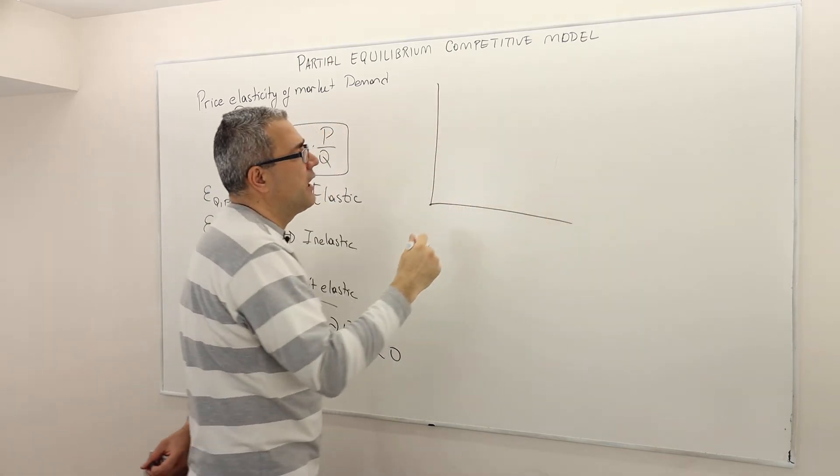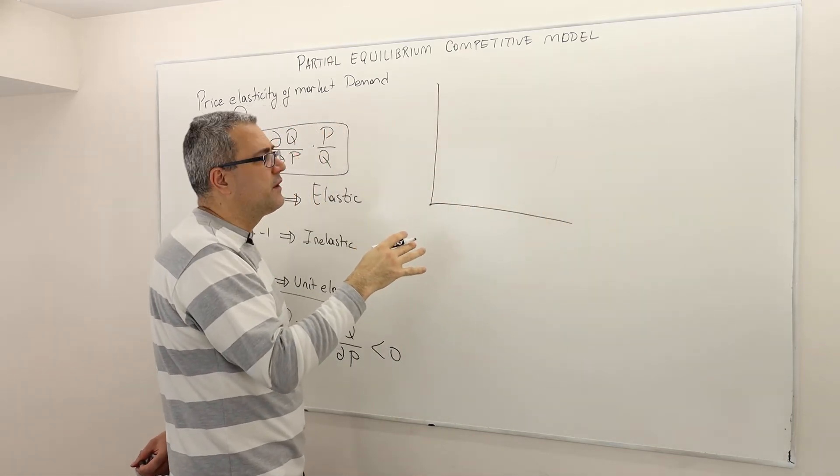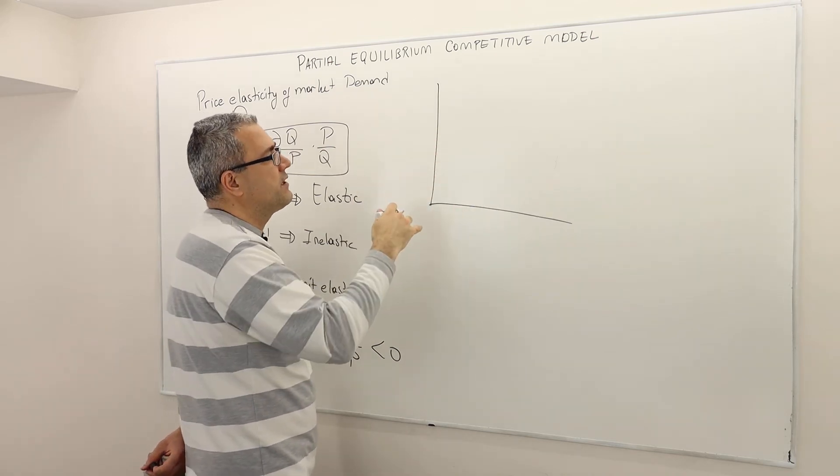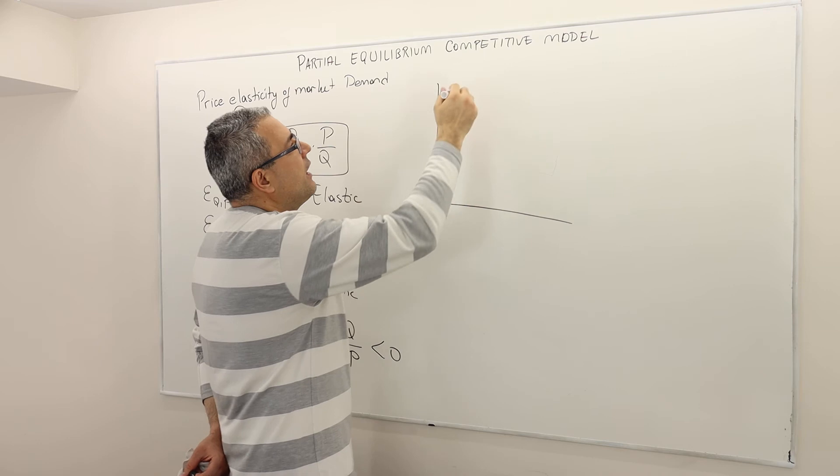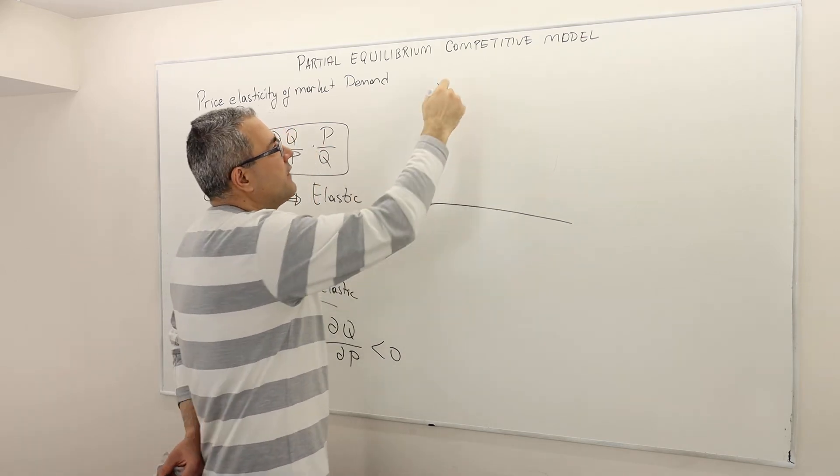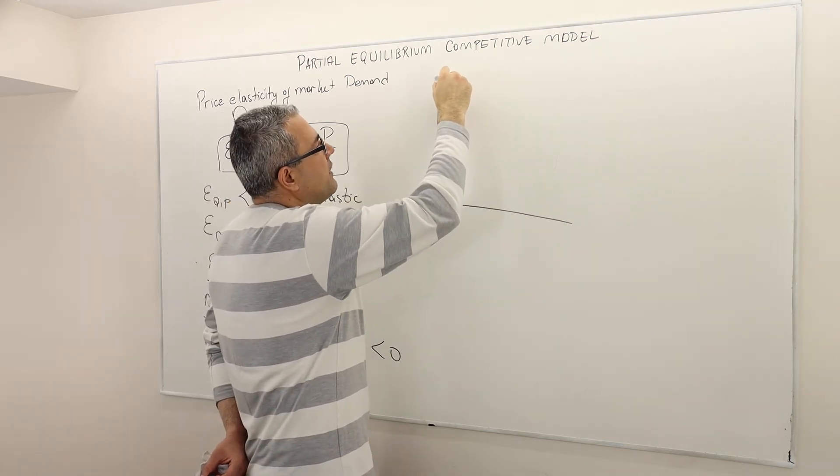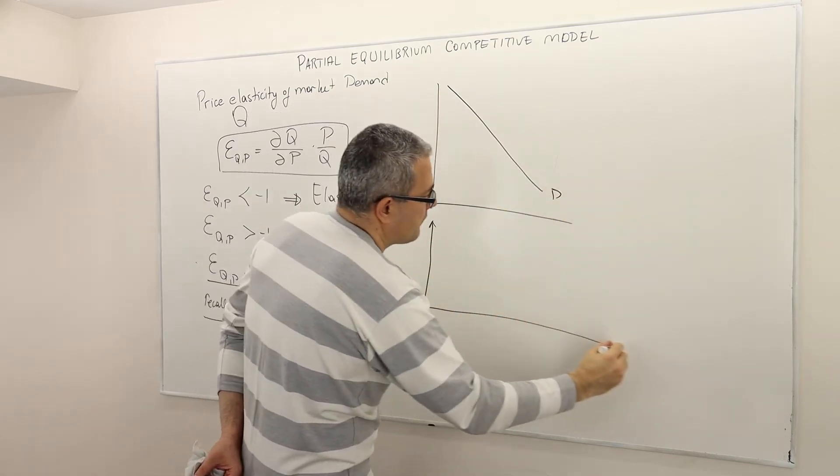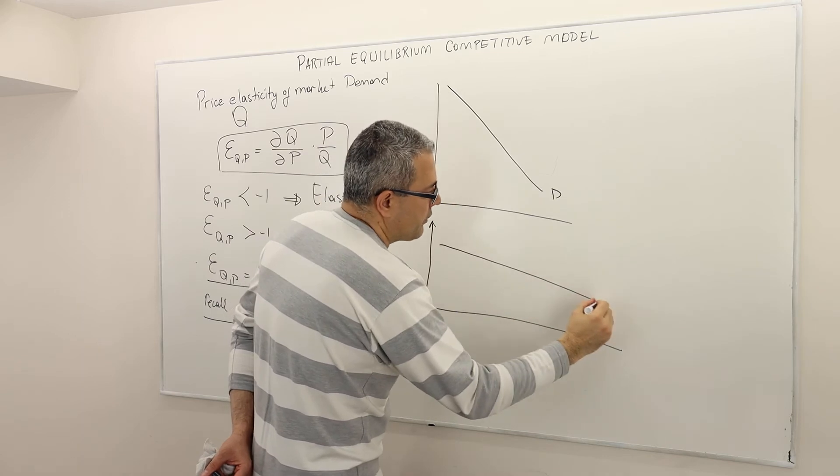Graphically, this is what it looks like. Obviously, the demand curve doesn't have to be a straight line, but let's suppose it is a straight line for simplicity. Obviously, everything is relative. But we have, for example, this demand curve versus this demand curve.